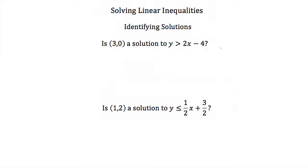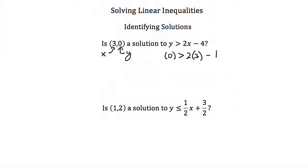Our first example asks us: is (3, 0) a solution to y is greater than 2x minus 4? To figure out if it's a solution, our first step is to plug in this point into the inequality. So we're going to plug in 3 for x and 0 for y. We'll get 0, which is plugged in for y, needs to be greater than 2 times 3, which is what x is equal to, and then we subtract 4.